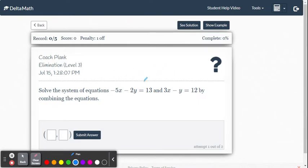And if you look at the coefficient of y, you have negative 2y and then negative 1y. Oh, can I multiply this equation on the right here just by negative 2?